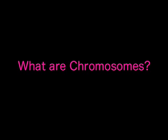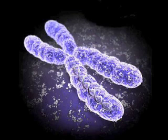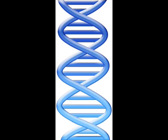What are chromosomes? Chromosomes are thread-like structures of nucleic acids and proteins found in the nucleus of most living cells, carrying genetic information in the form of genes. Each chromosome contains deoxyribonucleic acid, or DNA, a double helix containing a linear sequence of genes, coiled and recoiled around proteins, or histones.